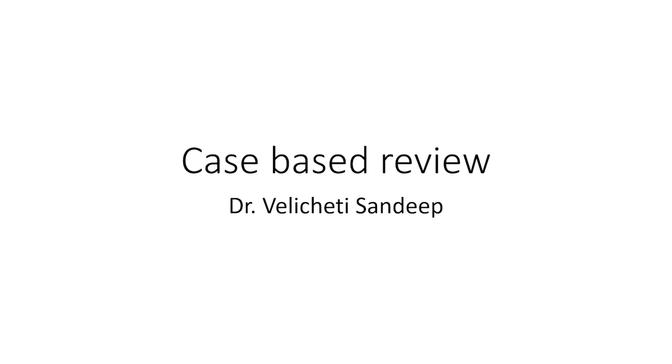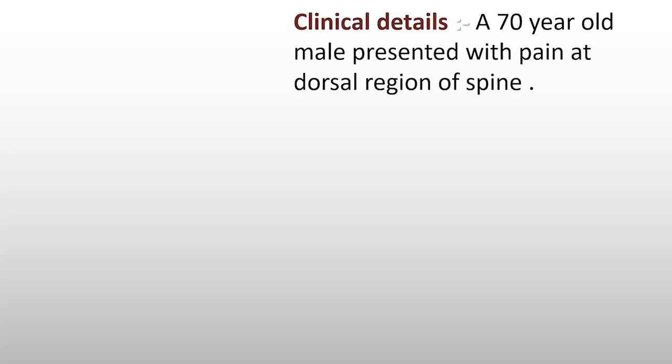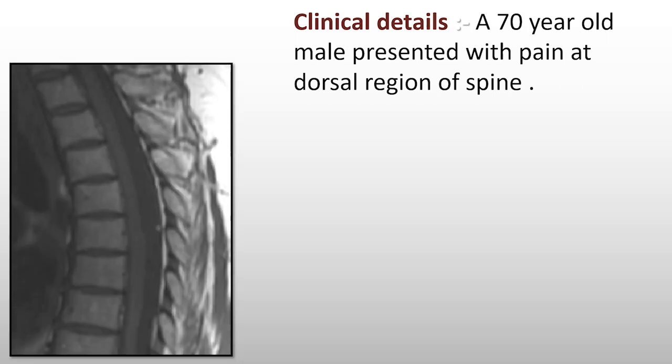Good morning everyone, welcome to another case-based review. Today is a historical case. This is a 70-year-old male patient presenting with dorsal pain, which is the reason an MRI has been performed. There are no neurological deficits or symptoms, mainly dorsal pain. On T1-weighted MRI images, we can see a small rounded sub-centimetric T1 hyperintensity along or just anterior to the dura in the subarachnoid space, without significant abnormality in the rest of the spine except degenerative changes.